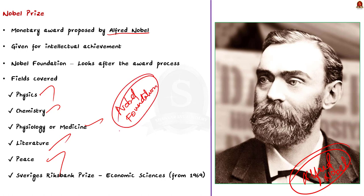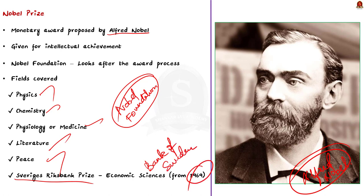The Nobel Prizes are given in physics, chemistry, physiology or medicine, literature and peace. An additional award called the Sveriges Riksbank Prize in Economic Sciences was established in 1968 by the Bank of Sweden in memory of Alfred Nobel and was first awarded in 1969. Even though it is not technically a Nobel Prize, it is identified with the Nobel Award, its winners are announced with Nobel Prize recipients, and the prize is presented at the Nobel Prize Award ceremony alongside the other five Nobel Prizes.